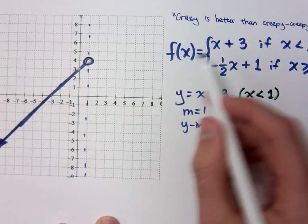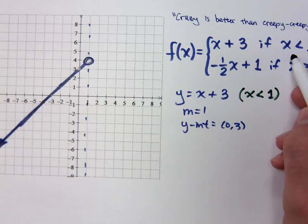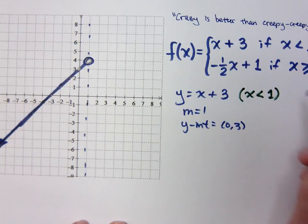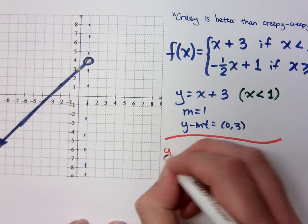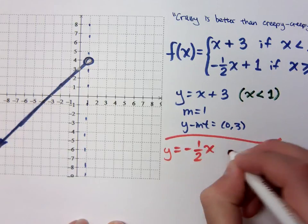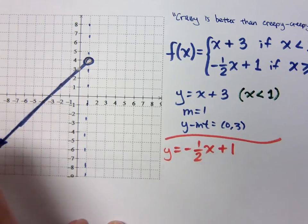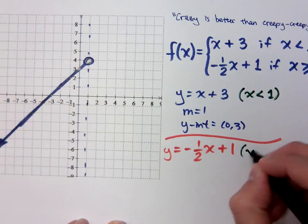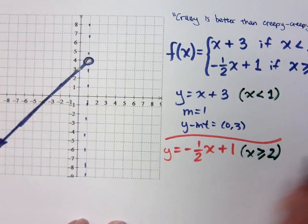My piecewise defined function looks like this line as long as x values are less than 1. Now let's look at the other part. The other part says y equals negative one-half x plus 1, and the condition is x is greater than or equal to 2. So where do I make my cut line?